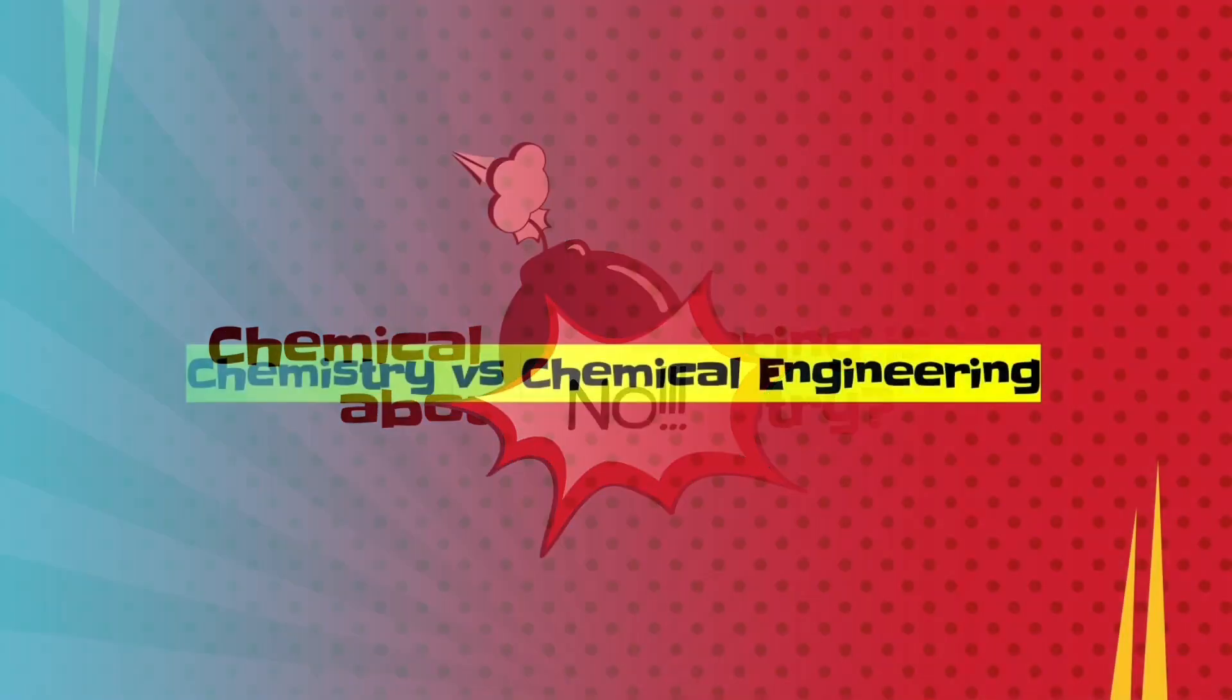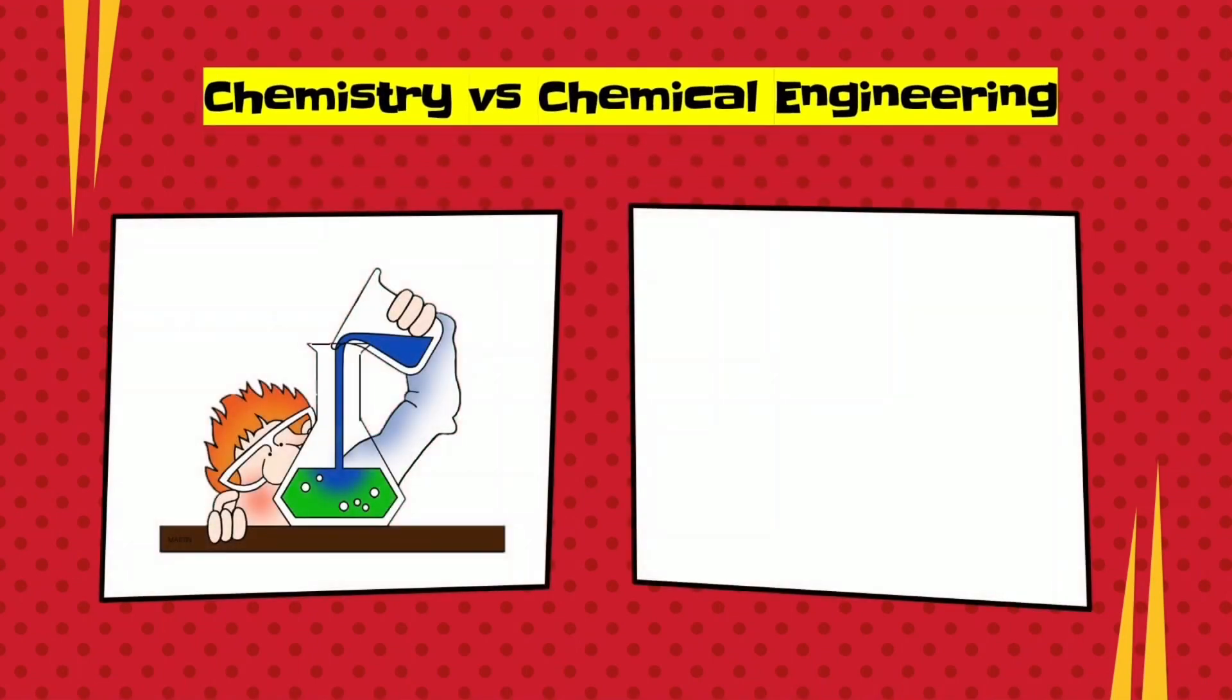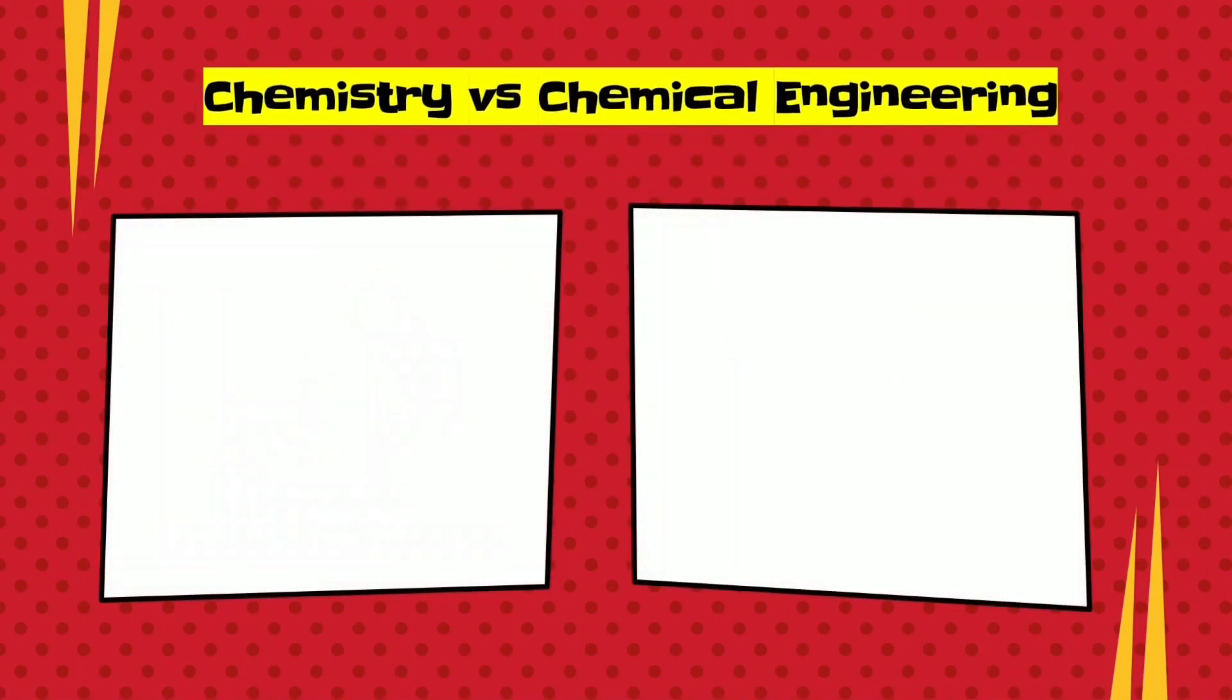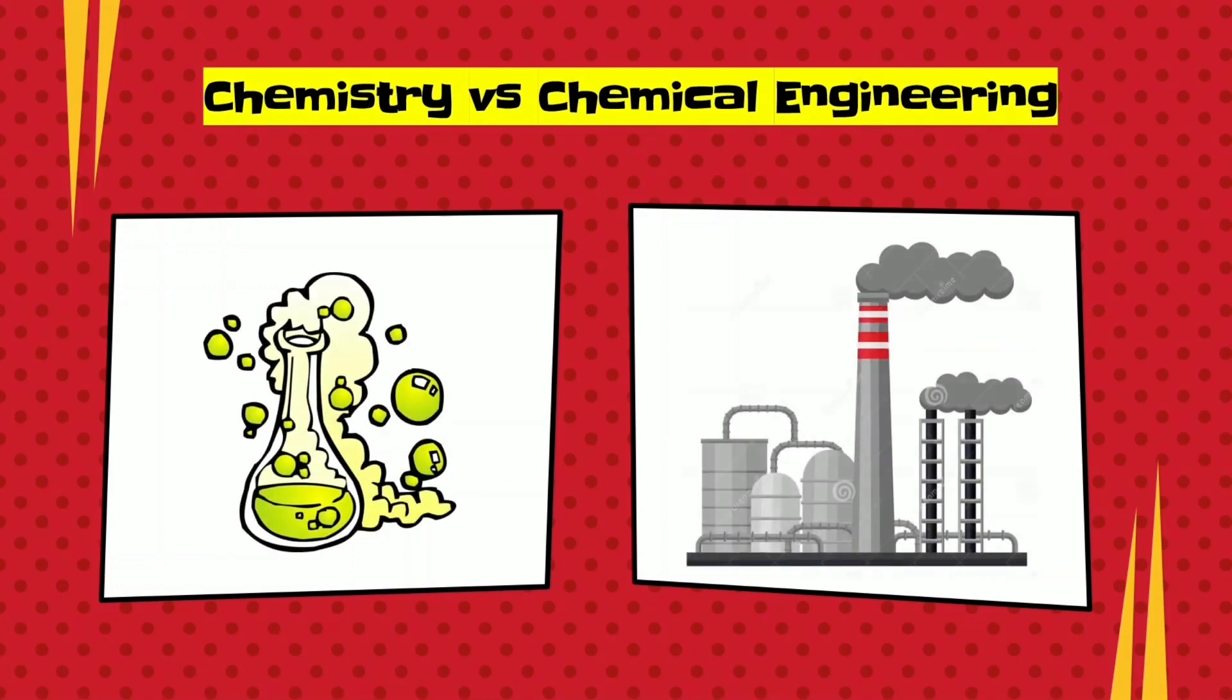It's not. Chemistry and chemical engineering are two very different things. Chemistry is the study of reaction and the discovery of reaction. Well, chemical engineering is taking the reactions that chemists have come up with and trying to optimize them, then put them in a calculated position where you can rely on them.